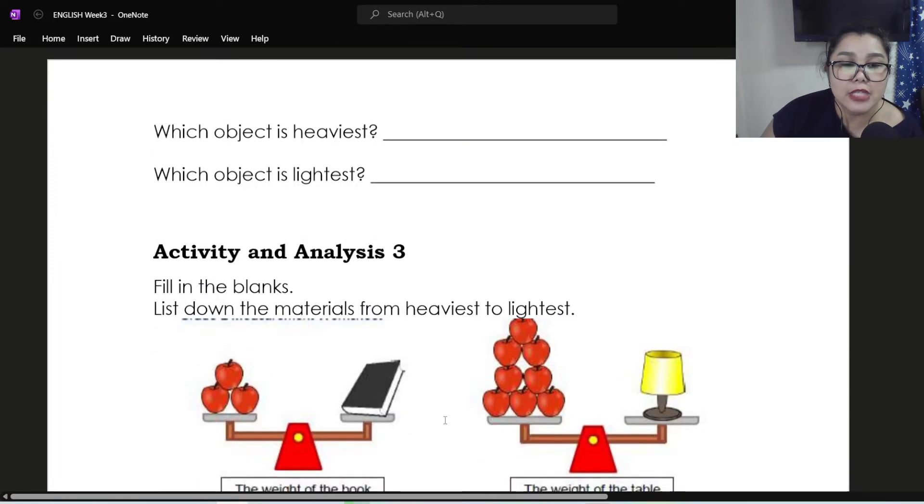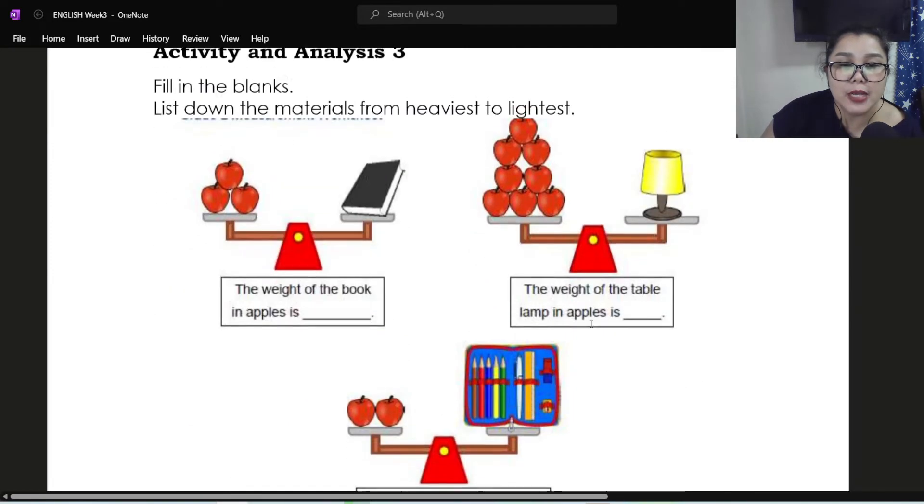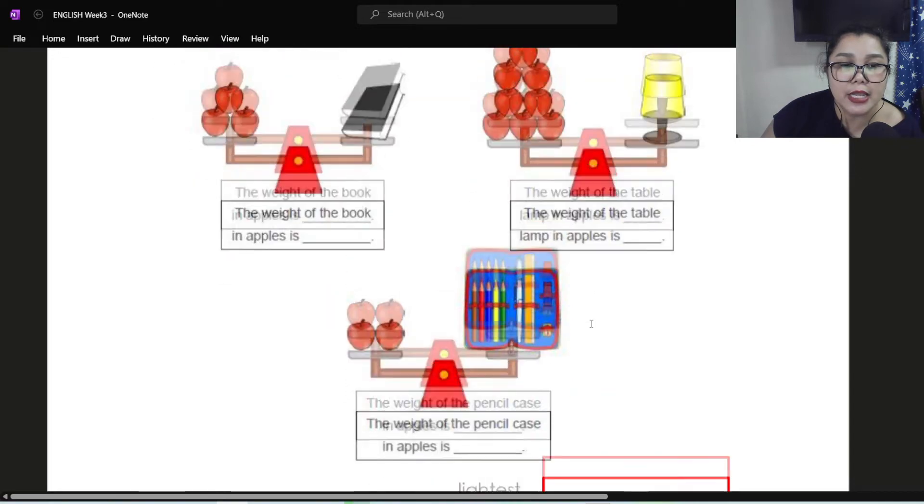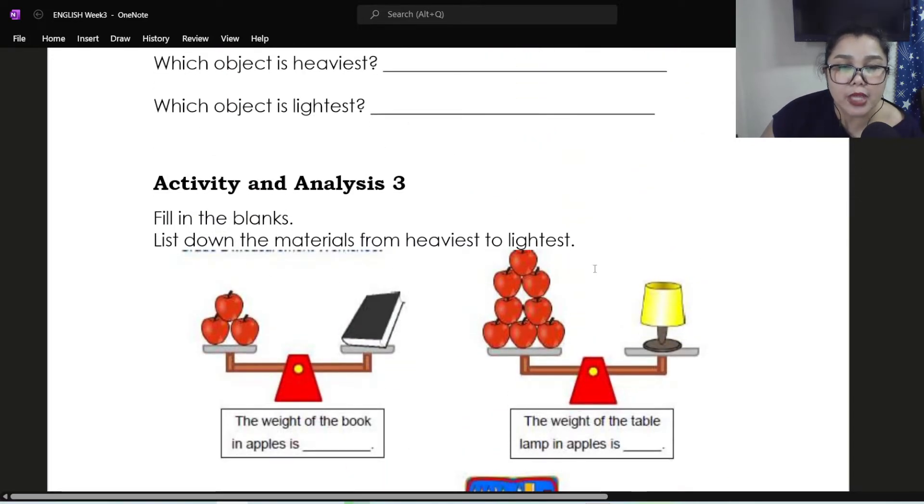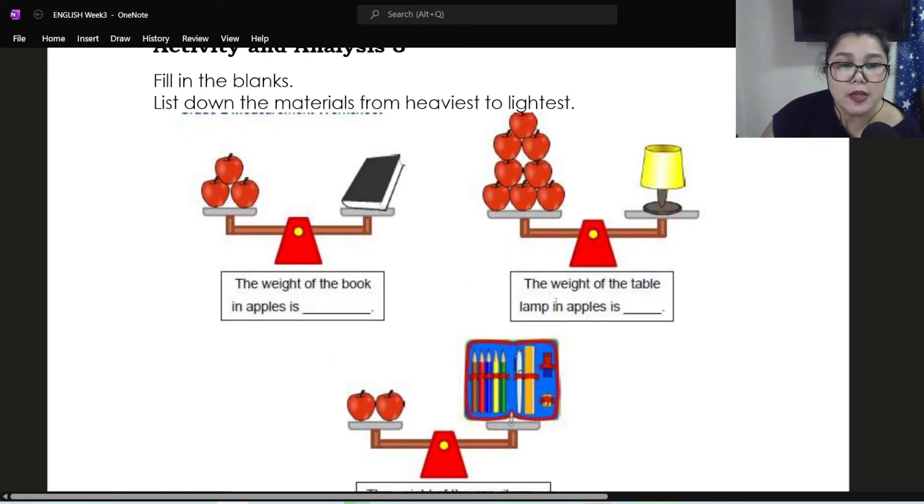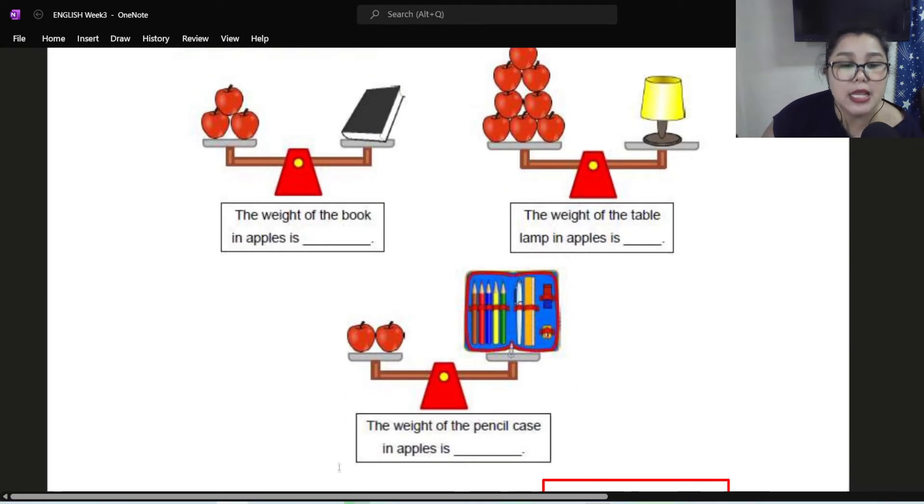And then, for activity and analysis three, fill in the blanks. And then, list down the materials from heaviest to lightest. So the number of apples will help you identify or determine which one is the heaviest and which one is the lightest. So all you need to do is count the number of apples. That's the equivalent mass of the objects. So the weight of the book in apples is blank. So you just write the number. Next, the weight of the table lamp in apples is blank. Count the number of apples. The weight of the pencil case in apples is blank.